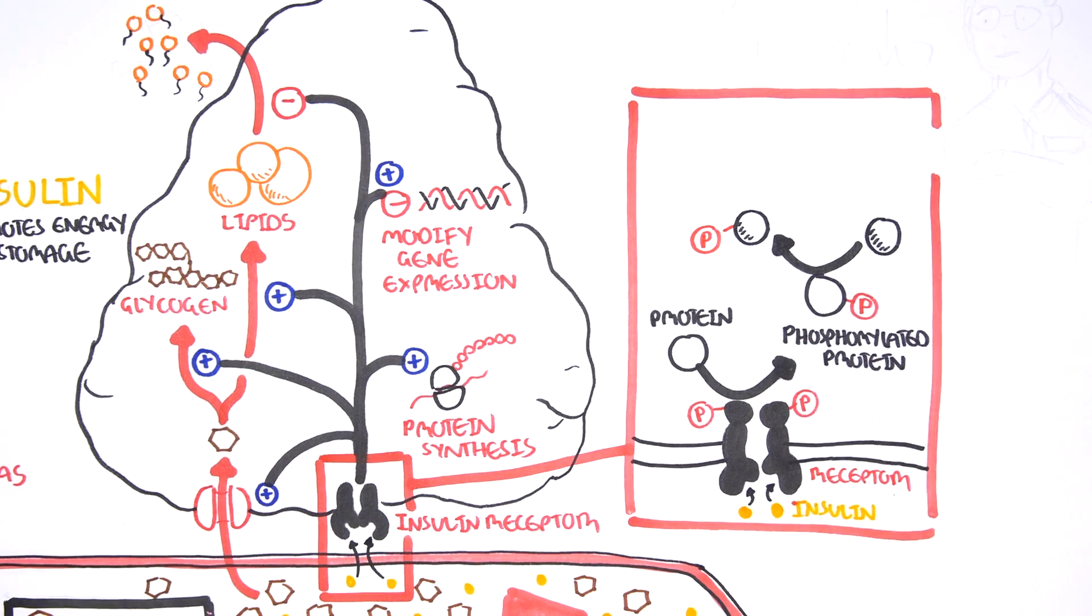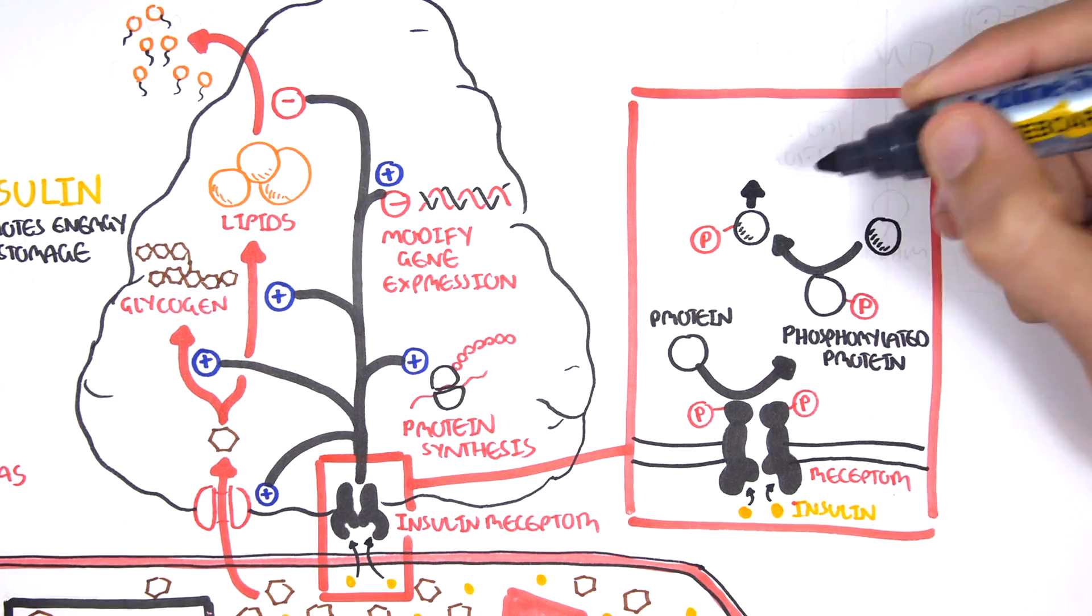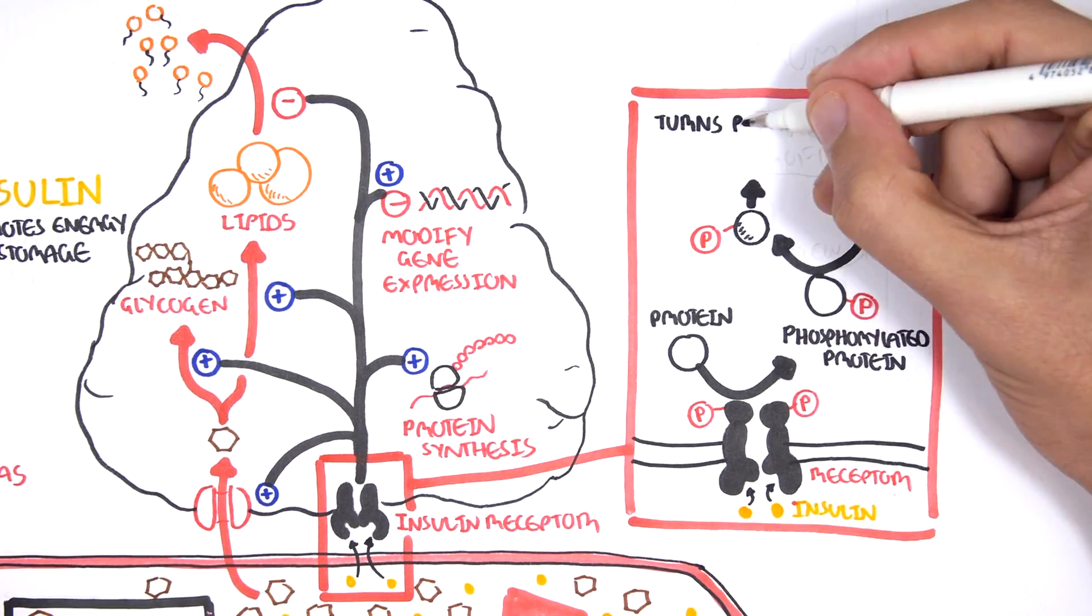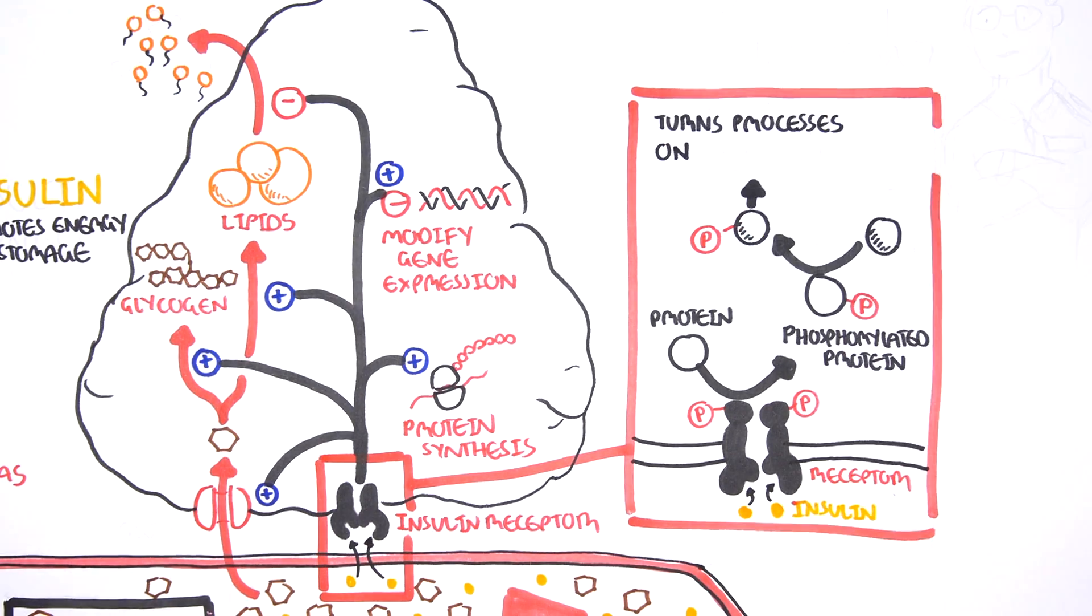Thus, by using protein phosphorylation, the cell can select which processes to turn on or off and when.